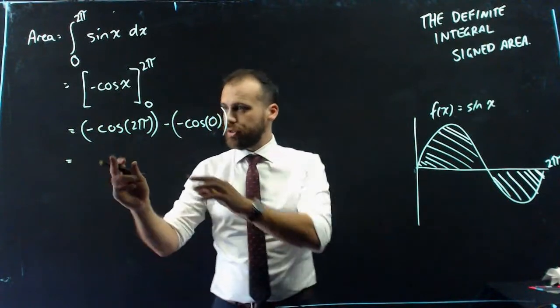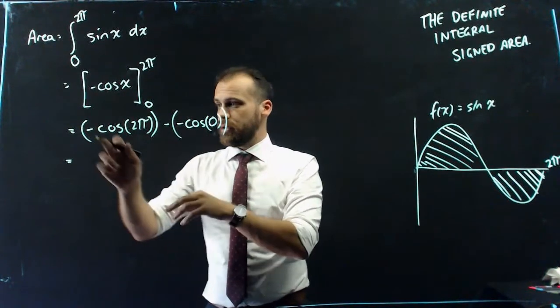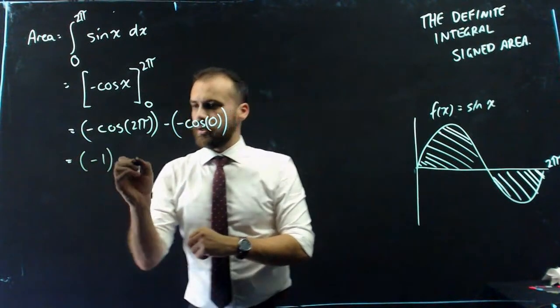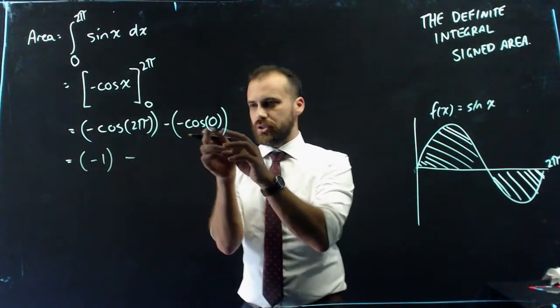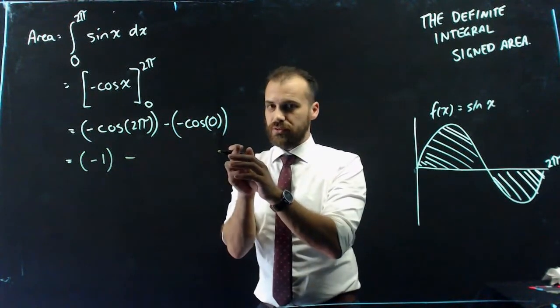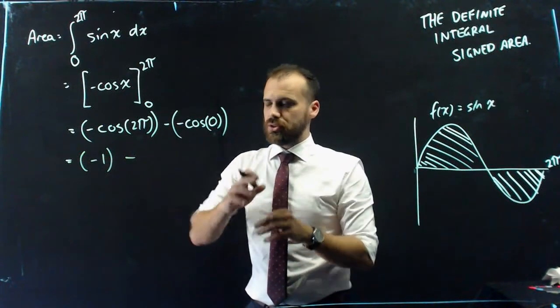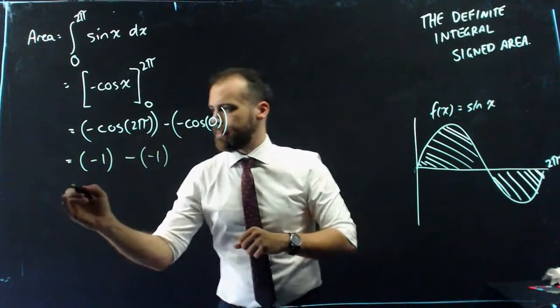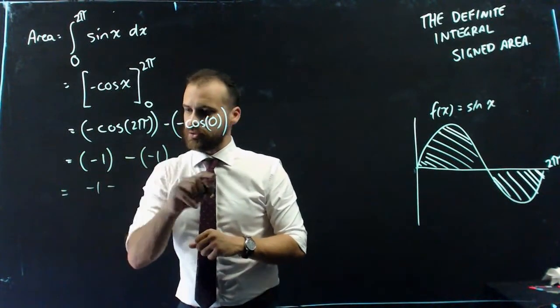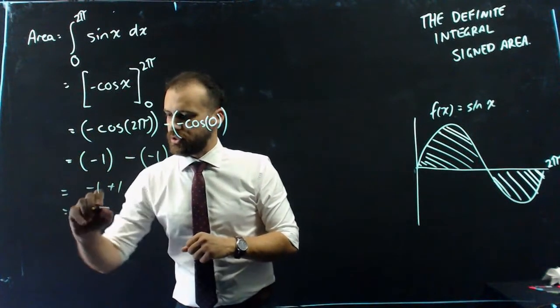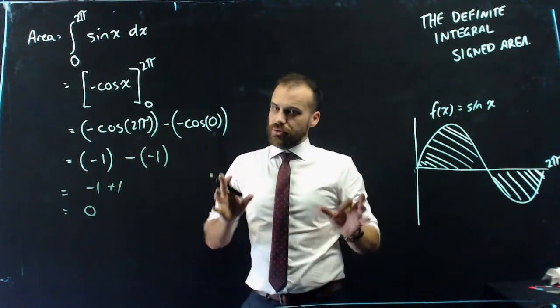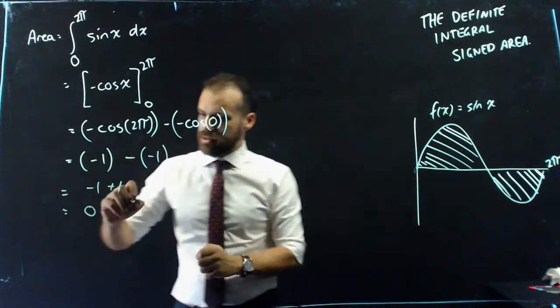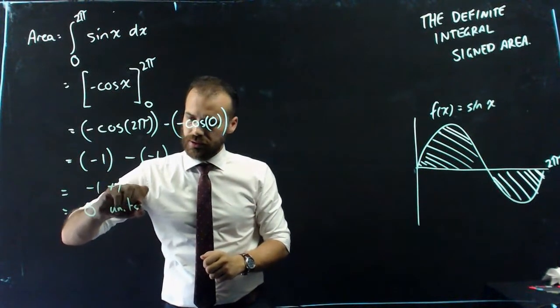So now we should know that cos 2 pi is 1, so negative of cos 2 pi is negative 1. And then we're subtracting cos of 0, or negative cos of 0. So cos of 0 is 1, so that's negative 1. So now we have negative 1 minus minus 1, which is plus 1, which is 0. I started this whole thing by trying to find the area here and here, this shaded area, and my answer is 0 units squared.